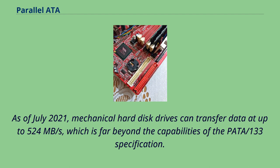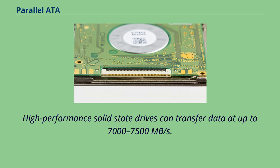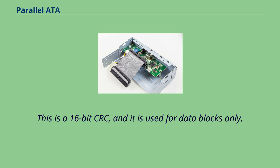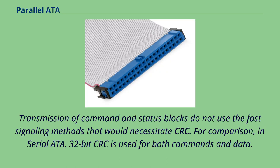Only the UltraDMA modes use CRC to detect errors in data transfer between the controller and drive. This is a 16-bit CRC, and it is used for data blocks only. Transmission of command and status blocks do not use the fast signaling methods that would necessitate CRC. For comparison, in Serial ATA, 32-bit CRC is used for both commands and data.